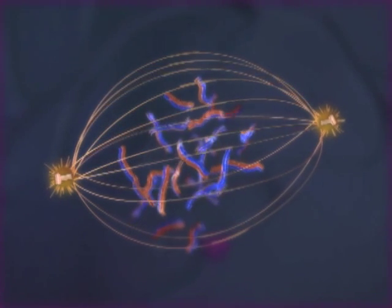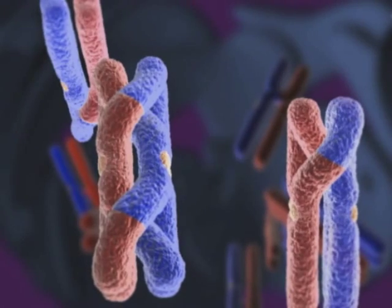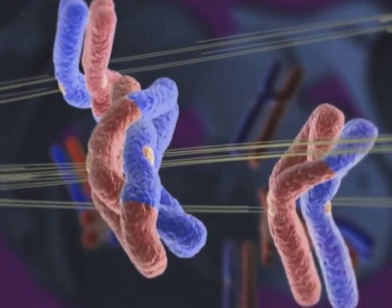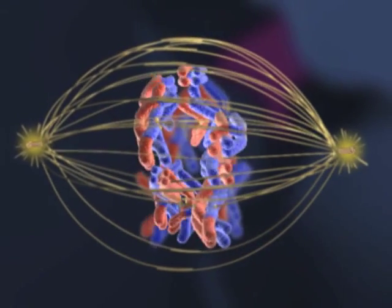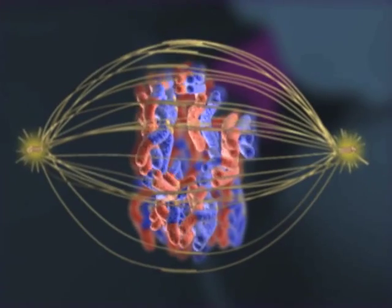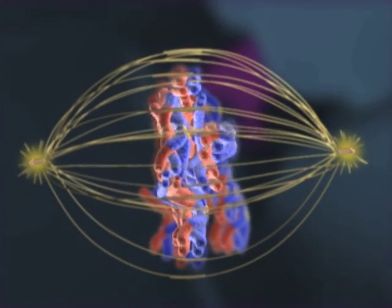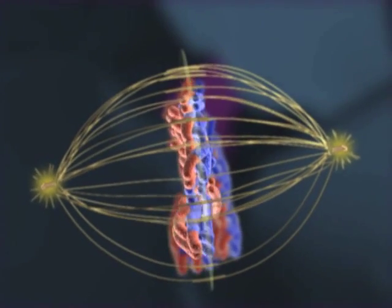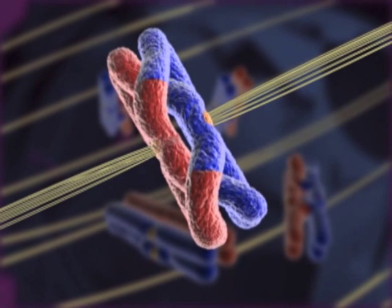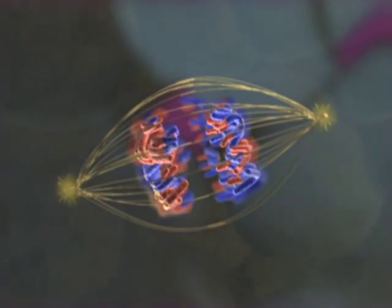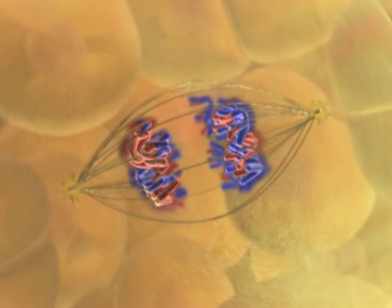After the spindle forms and the nuclear envelope breaks down, microtubules from opposite poles attach to each chromosome of the homologous pair, resulting in a tug-of-war. At metaphase I, the chromosome pairs are positioned in the middle of the cell.